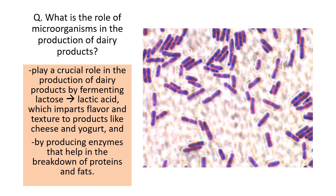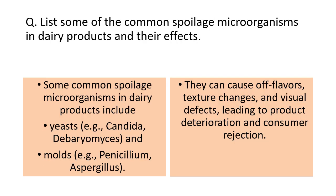What is the role of microorganisms in the production of dairy products? Different types of microorganisms play a very crucial role. The main mechanism is that they ferment lactose to lactic acid, which imparts different flavors and textures to products — whether it is cheese, yogurt, etc. They also produce enzymes that help in the breakdown of proteins and fats. That is the basic role of microorganisms in dairy product production.